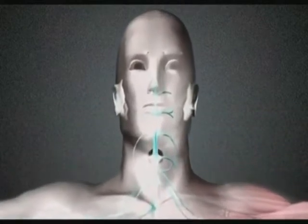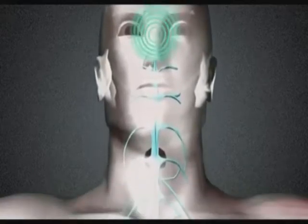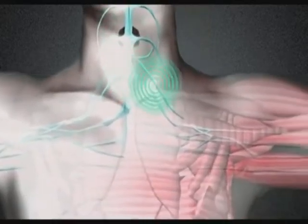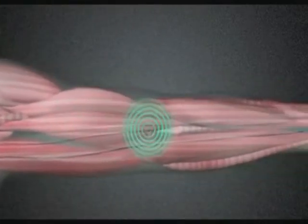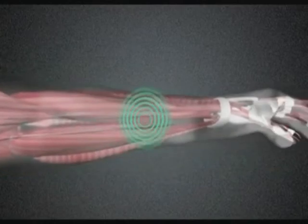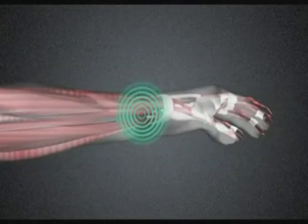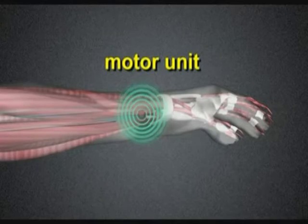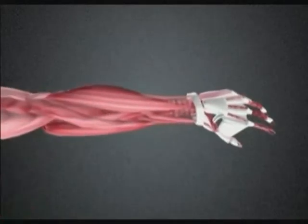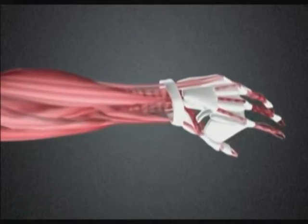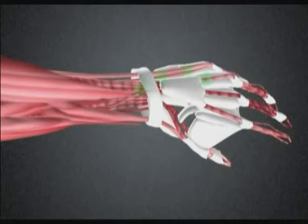These impulses are sent by nerve cells called motor neurons. One motor neuron doesn't stimulate the whole muscle but only a number of fibers within that muscle. The motor neuron and the fibers it stimulates is called a motor unit. The smaller muscles of the body, like those in the eyes or the fingers, contain relatively few motor units.